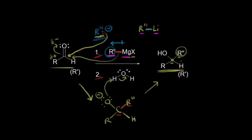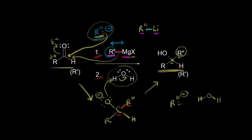You have to do this reaction in two steps. If you try to add the proton at the same time as the organometallic, the problem is that organometallics are not only good nucleophiles — they're also strong bases. If a carbanion reacts with water, it will simply pick up a proton from water to form an alkane. So you don't want that to happen, which is why you need to separate these steps. This is an oversimplified mechanism, but it's the best way to think about it for an undergraduate student.